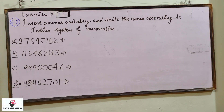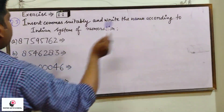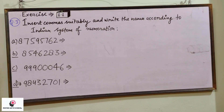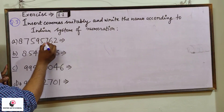Question number three asks us to insert commas suitably and write the number names according to the Indian system of numeration. First we put the commas, then write the number names. As we know, in the Indian system of numeration the first comma comes after three digits from the right, and then after every two digits. So let us put the commas: one, two, three — then one, two after that.